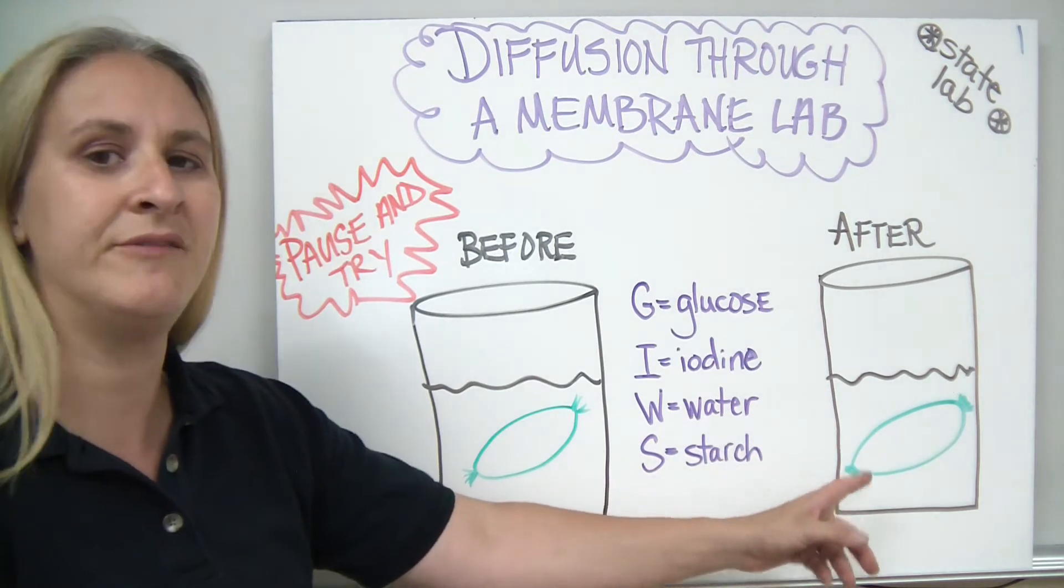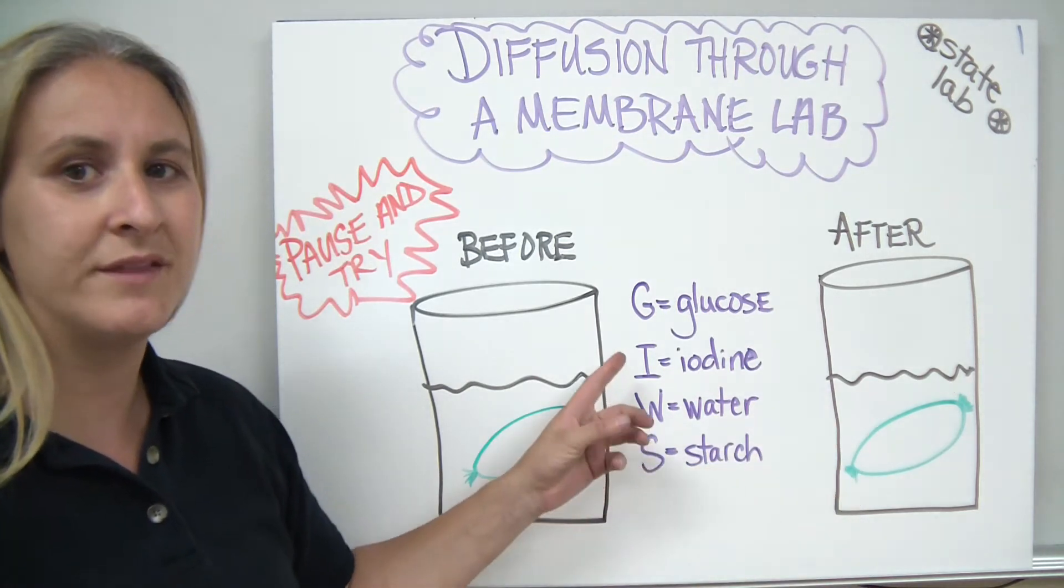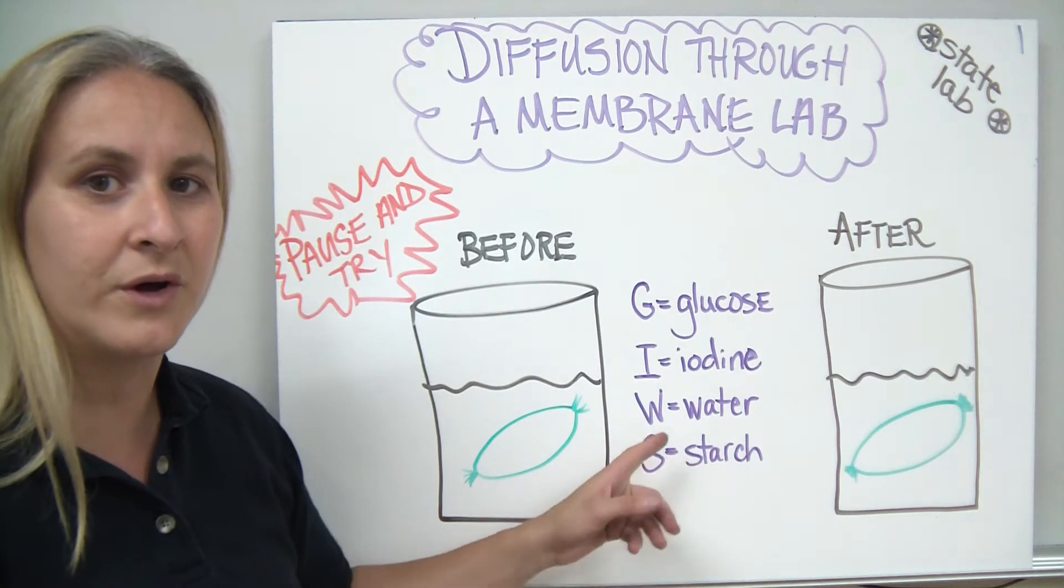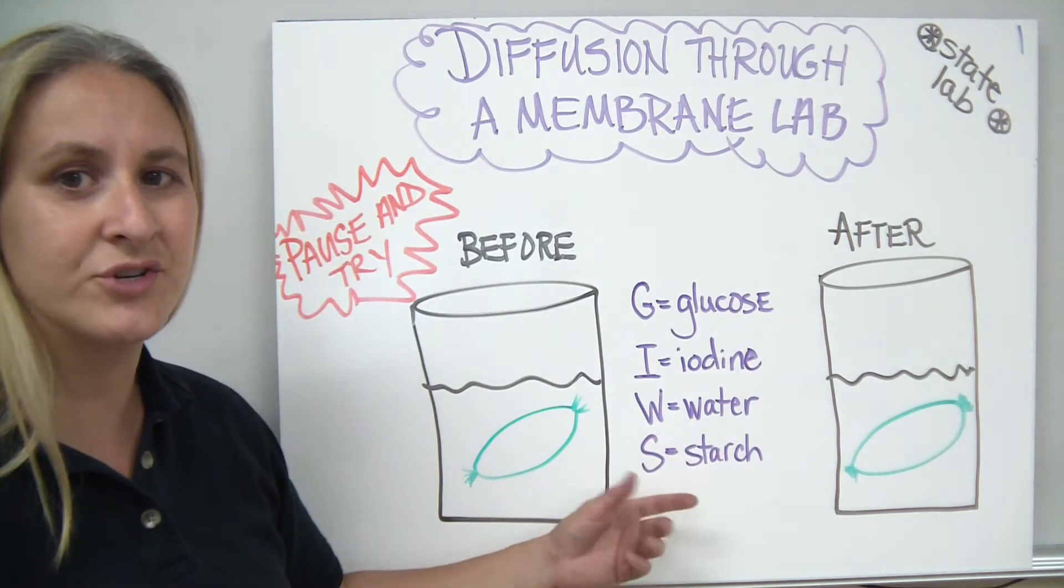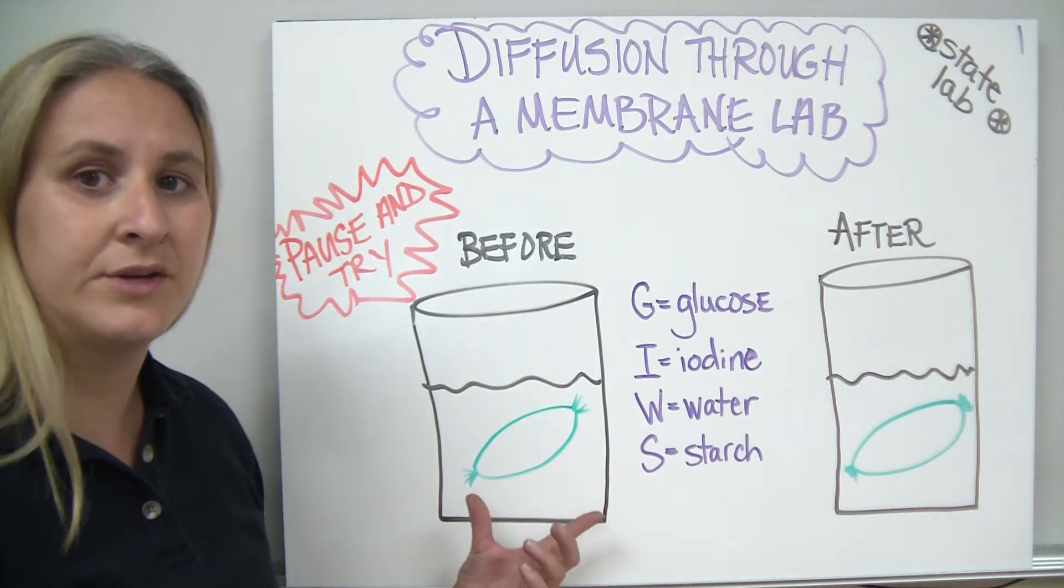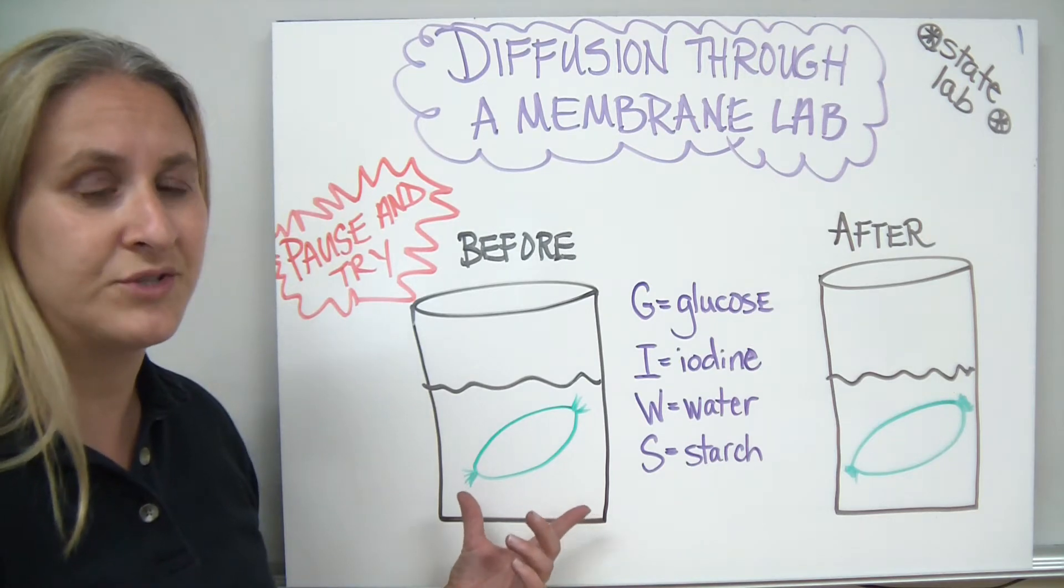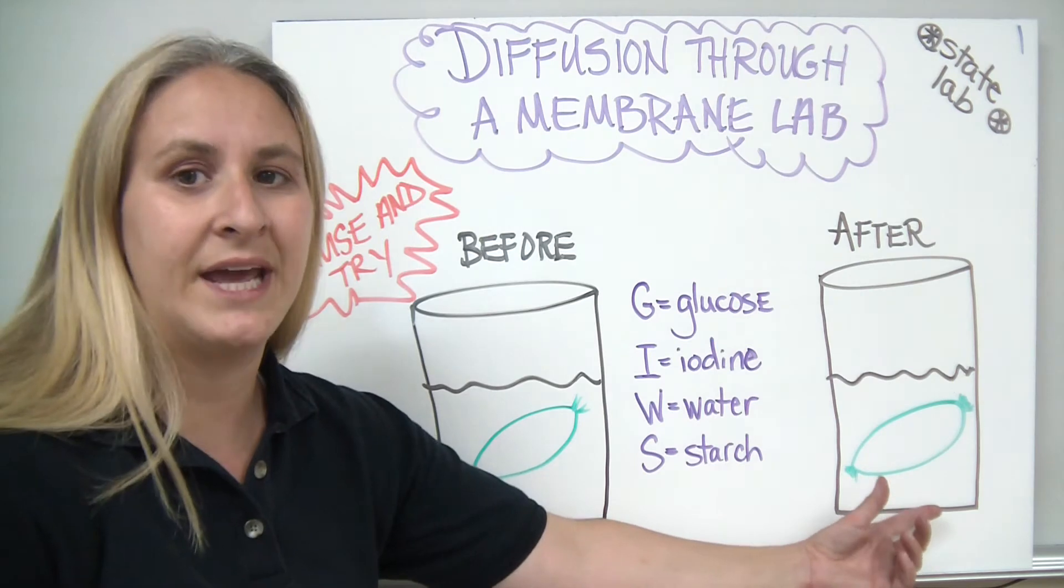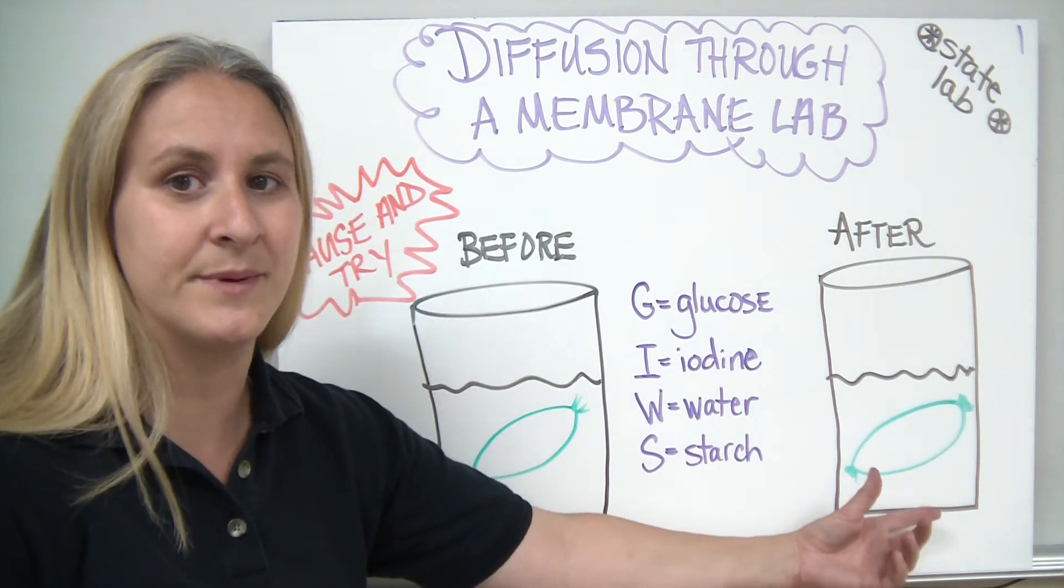label the before and after diagrams with the letters G for glucose, I for iodine, W for water, and S for starch to show where the molecules of glucose, iodine, water, and starch were before or at the beginning of the experiment and then after once we have completed the experiment.